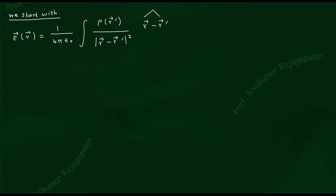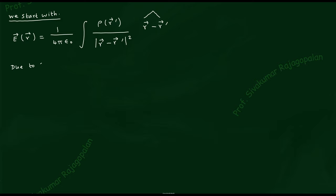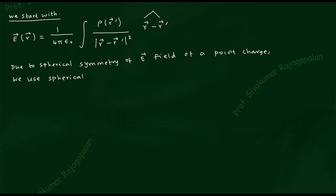Due to the spherical symmetry of the electric field of a point charge, we use the spherical polar coordinate system, denoted by r, θ, φ. Let me explain what I mean by this.